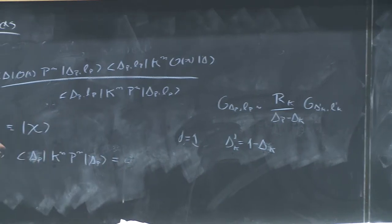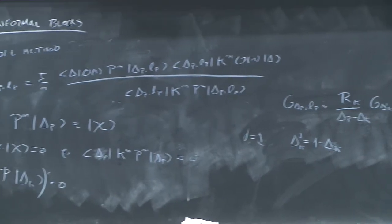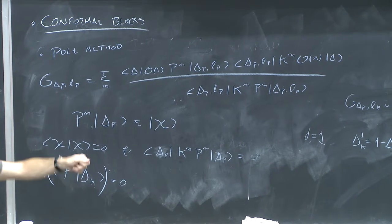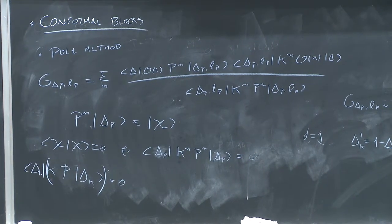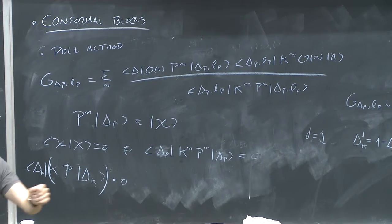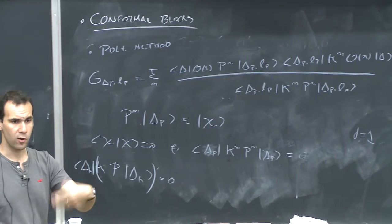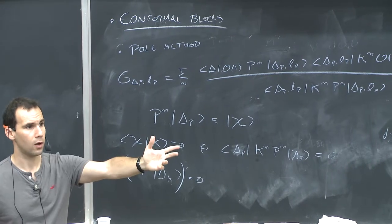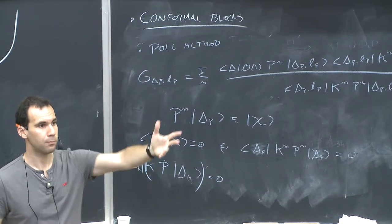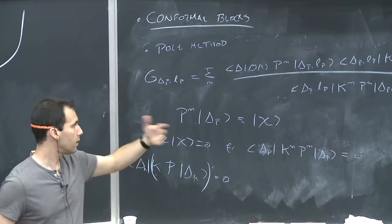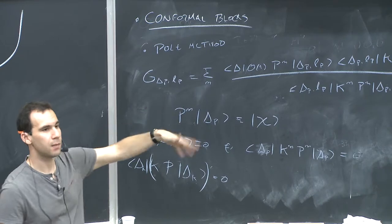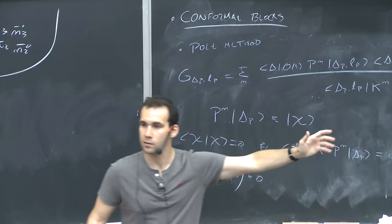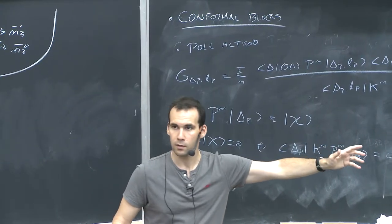This is the general idea. If you have a general conformal block, then as you move around in delta you may hit poles, and the residue of that pole is a new conformal block. That block will also be a sum of poles with residues, so you can iterate this.